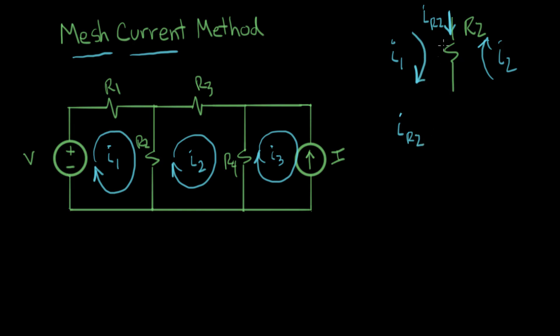So if we wanted to know I_R2, it would be the sum of these two currents. Now I1 is flowing in the same direction as I_R2, so this equals I1. And I2 is going in the opposite direction, so it gets a minus sign. If we somehow knew I1 and I2, this is how we would compute the actual current flowing in R2.